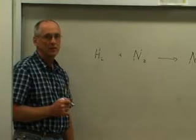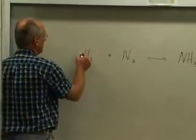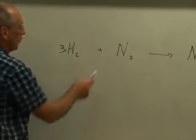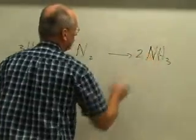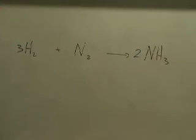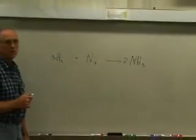We balanced the equation for the formation of ammonia by seeing that we required three hydrogen molecules with one nitrogen molecule to make a total of two ammonia molecules. That leaves you with two nitrogen atoms on each side of the arrow and six hydrogen atoms on each side of the arrow. The equation is balanced.